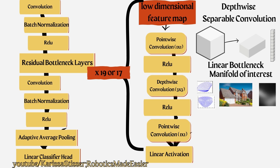Next, we need to look at the manifold of interest for the linear bottleneck. When we send the low dimensional feature map in — which are features that we're getting from the image — we do pointwise convolution, which expands the dimension. We're then able to do nonlinear activation with ReLU and then perform depthwise convolution.